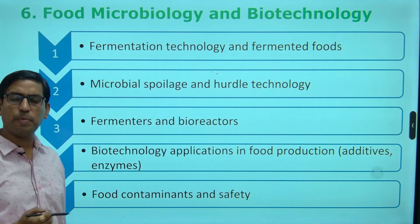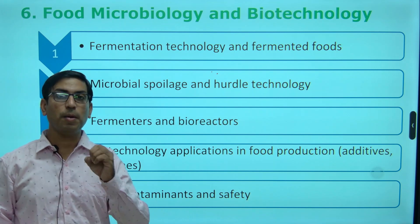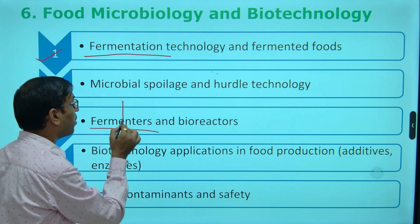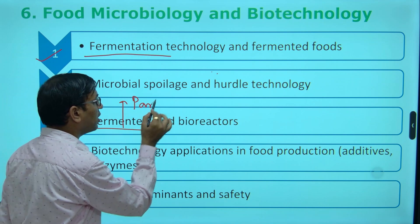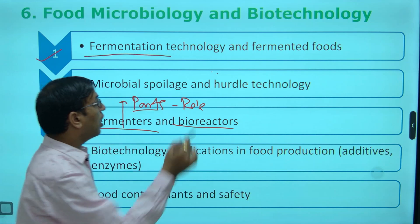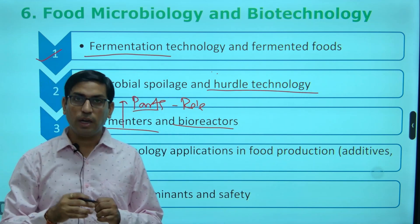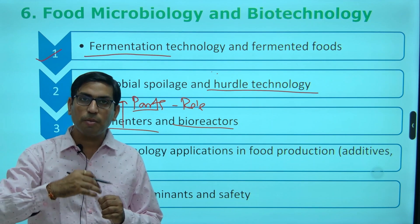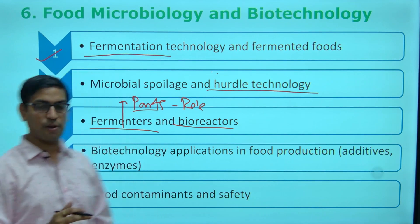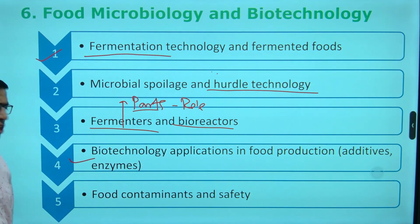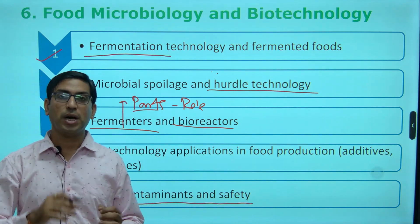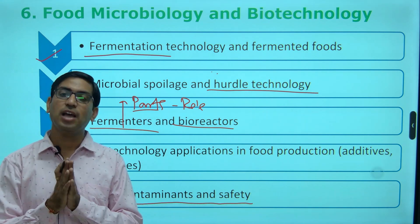The next topic is food microbiology and biotechnology. The key concepts of microbiology and biotechnology include fermentation — not only fermentation types of fermenter, what are the key parts and the key role for each part of the fermenter, and even the bioreactor. Hurdle technology — where we use more than one technology so that the commodity can be sustained. Biotechnology application in food production, and finally food contamination and safety — with concern to hazards, how we eliminate or control those hazards.